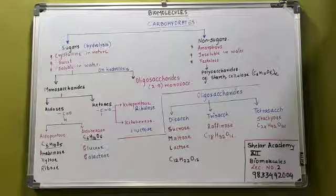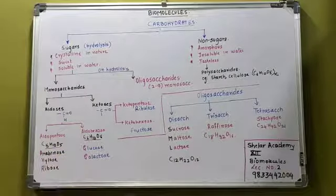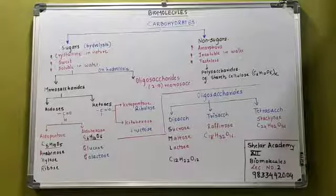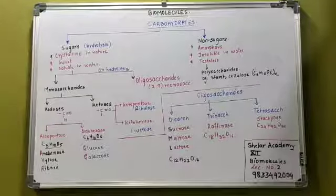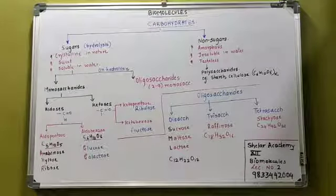Examples: for disaccharides, remember SML — sucrose, maltose, lactose. For trisaccharides, the example is raffinose. For tetrasaccharides, the example is stachyose.